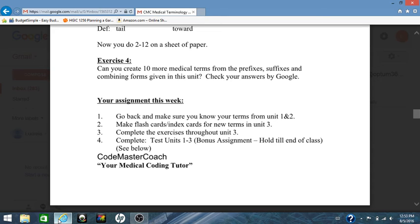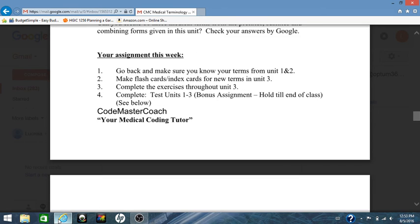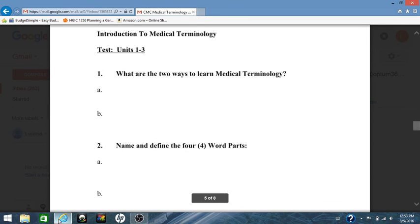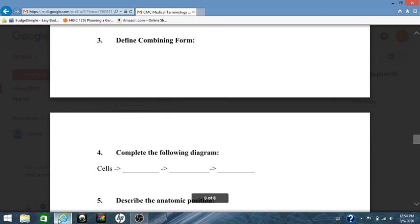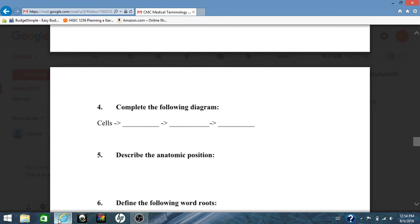This is a bonus assignment that I mentioned in unit 1. You hold this till the end of the class. But look below here. I have your bonus assignment. And it's a test on units 1 through 3. Number 1 says, what are the two ways to learn medical terminology? We've discussed that. Name and define your four-word parts. I've drilled these in your head. Define your combining form. What is a combining form? What is a combining form made of? Number 4, complete the following diagram. And I've given you a diagram. Cells equal what? Equal what? Equal what? Fill in those words.